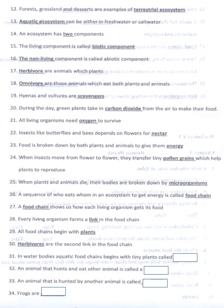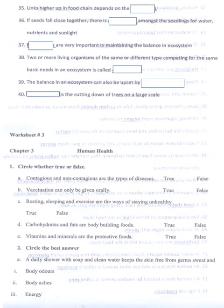In water bodies, aquatic food chains begin with tiny plants called plankton. An animal that hunts and eats other animals is called a predator. An animal that is hunted by another animal is called prey. Frogs are predators. Links higher up in the food chain depend on the lower links. If seeds fall close together, there is competition among the seedlings. Food chains are very important in maintaining the balance in an ecosystem.